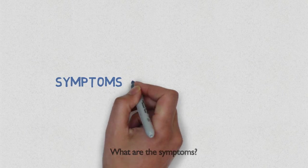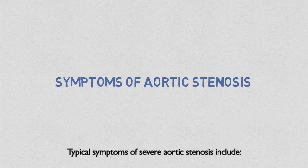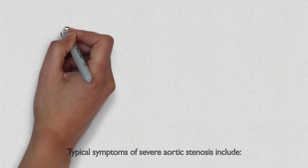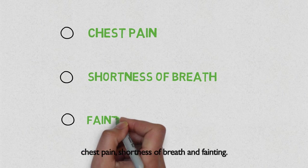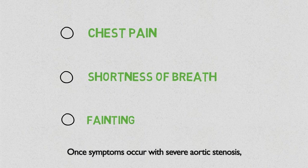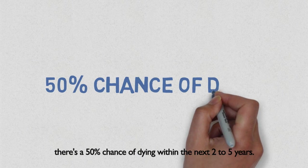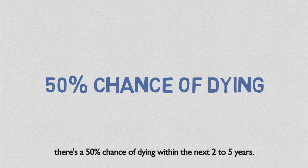What are the symptoms? Typical symptoms of severe aortic stenosis include chest pain, shortness of breath, and fainting. When symptoms occur with severe aortic stenosis, there's a 50% chance of dying within the next 2 to 5 years.